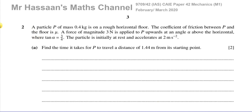Welcome back. This is Mr. Hassan's Maths Channel. I'm now answering question number two from the February-March 2020, Cambridge 9709 paper 4, variant 2, the Mechanics M1 paper. We are told about a particle P of mass 0.4 kilograms on a rough horizontal floor. The coefficient of friction between P and the floor is mu. A force of magnitude 3 newtons is applied to P upwards at an angle of alpha to the horizontal, where tan of alpha is 3 quarters. The particle is initially at rest and accelerates at 2 meters per second squared. Find the time it takes for P to travel a distance of 1.44 meters from its starting point.